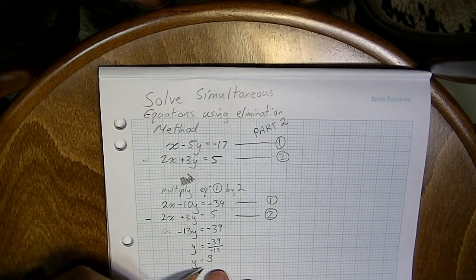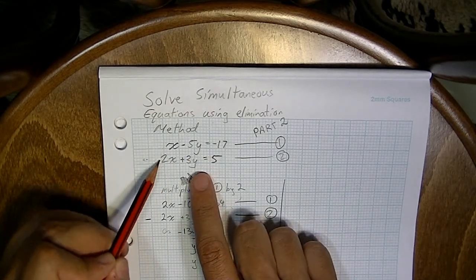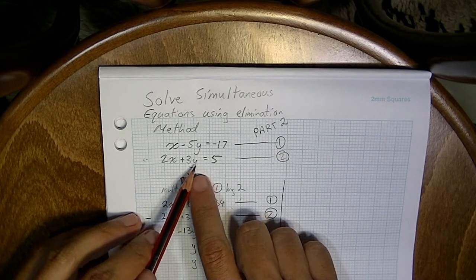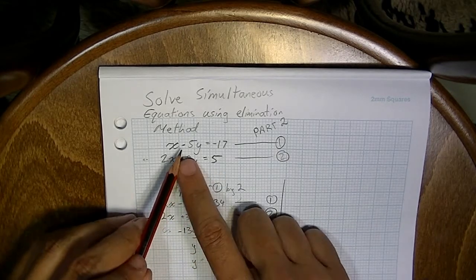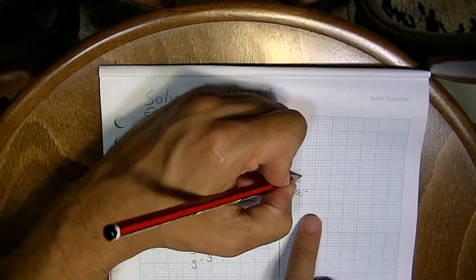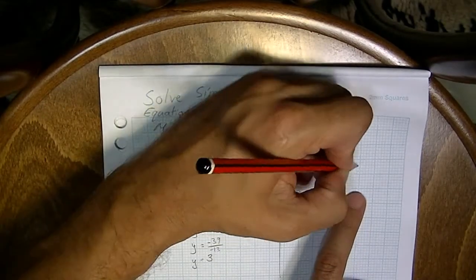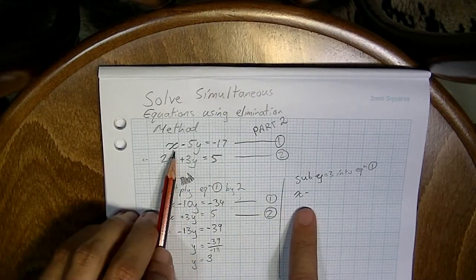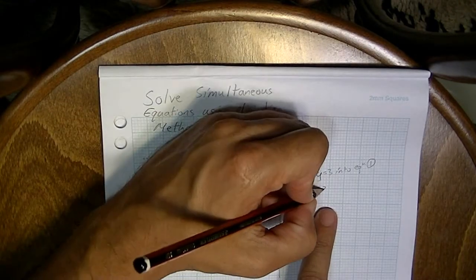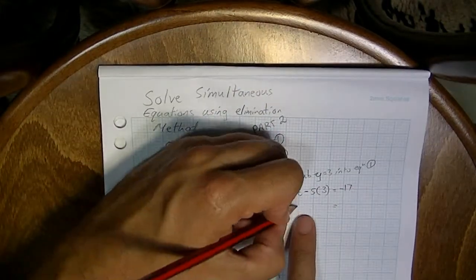That's not the full solution yet — we need to know what x is. So we take y equals 3 and substitute it into one of the equations. Look at the equations before you start: equation 1 has negatives in it, but I'm confident with negatives, so I'll sub y equals 3 into equation 1. Make sure you declare what you're doing. Equation 1 is x minus 5 times y equals negative 17, so substituting y equals 3: x minus 5 times 3.